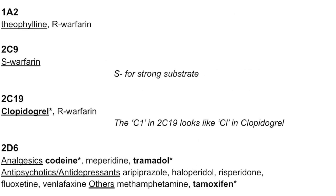The next enzyme is CYP1A2 — the main one is theophylline. Theophylline levels will be affected by inducers and inhibitors. For 2C9, the main drug to be aware of will be warfarin — specifically the S-warfarin enantiomer, which is stronger than the R. So I say S for strong substrate.